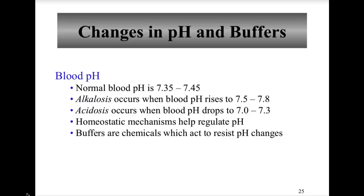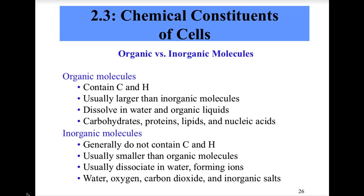We are finishing up chapter two, the chemical basis of life. Our last section is the chemical constituents of cells — this is where we begin to look at the difference between inorganic and organic chemistry. The main objectives are to list the major groups of inorganic chemicals common in our cells, explain their functions, and describe the general functions of the main classes of organic molecules in cells, which should be a refresher from biology.